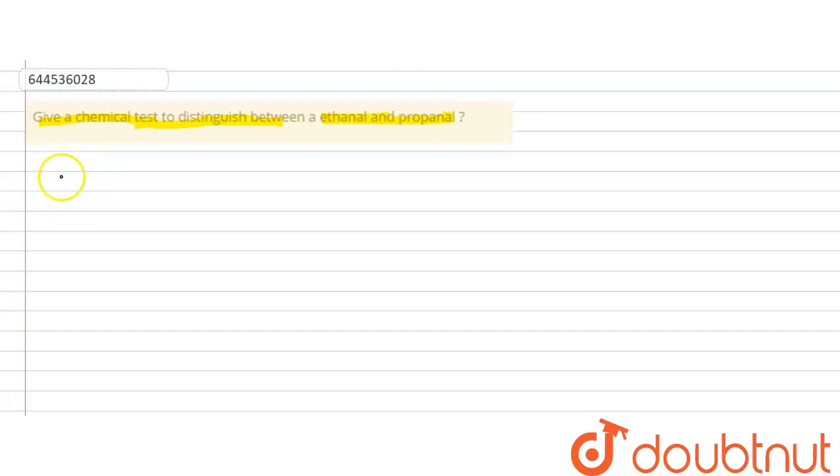First of all, our aim is to draw the structure of ethanol. So it is CH3CHO, this is ethanol. And what is propanol? Propanol is CH3CH2CHO, this is propanol and the first one is ethanol.